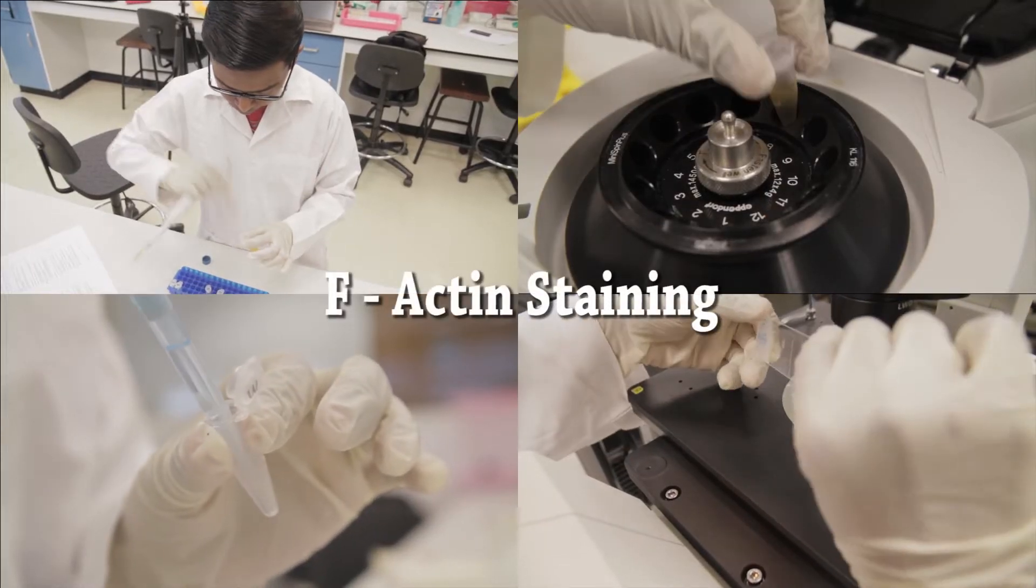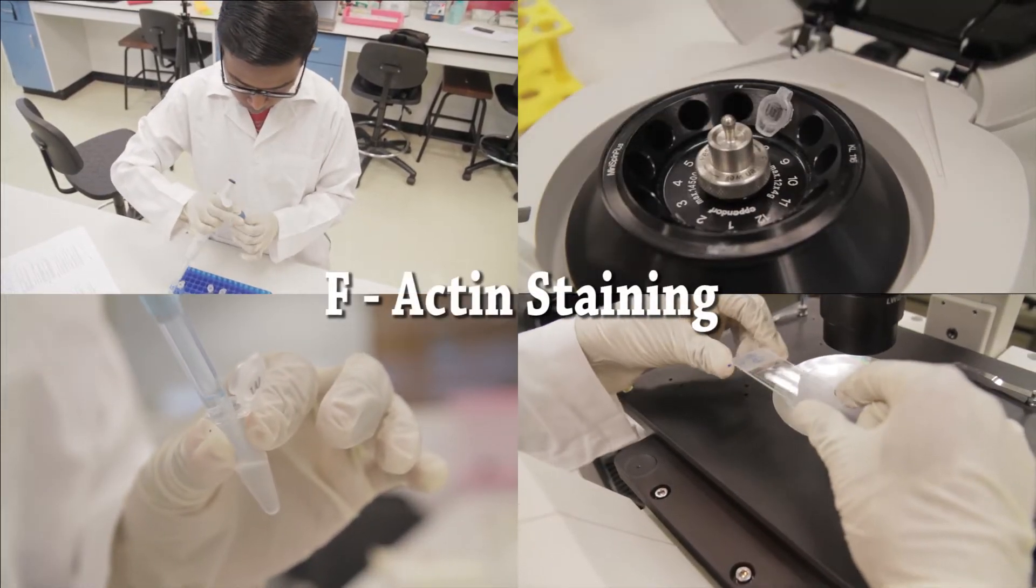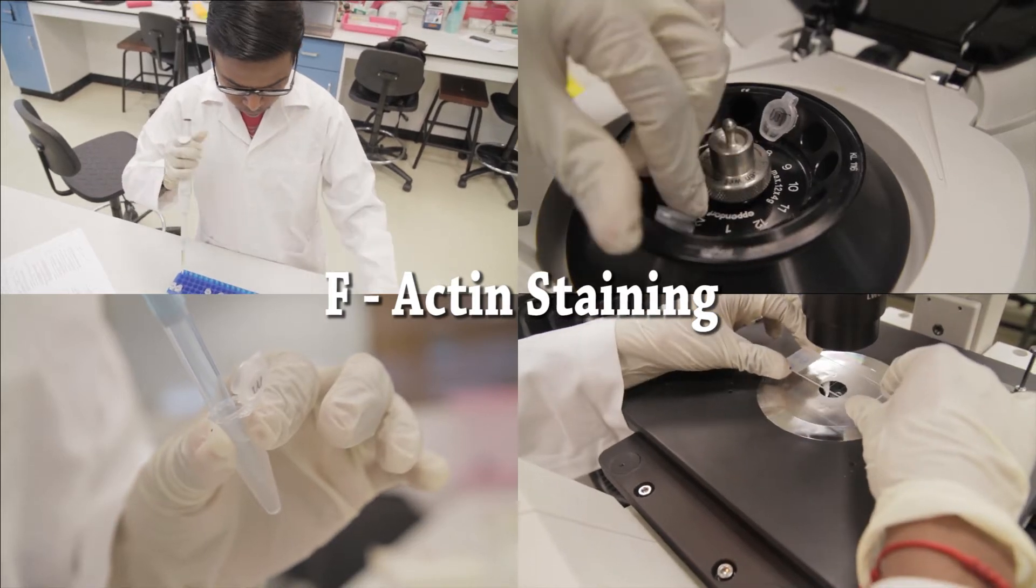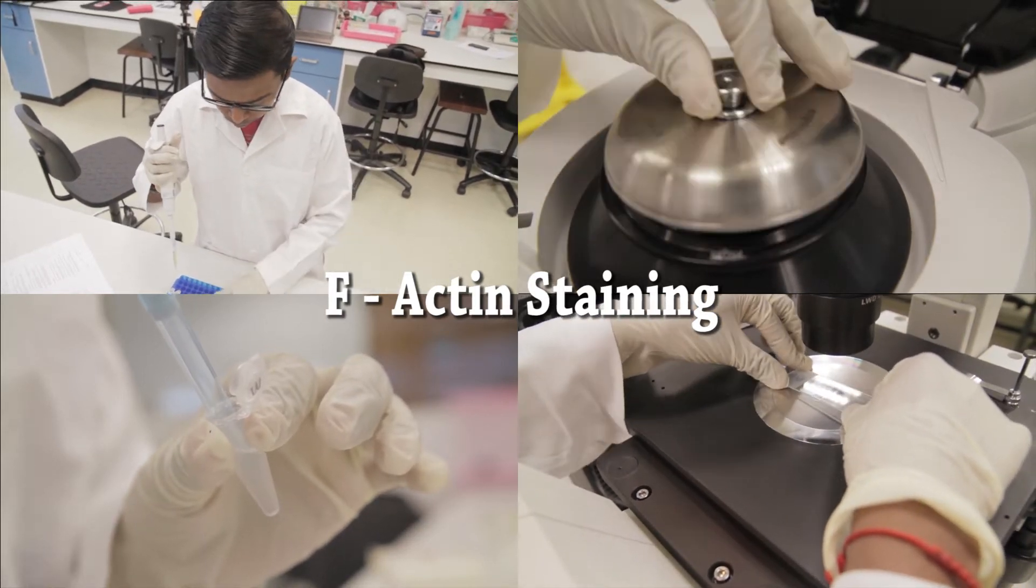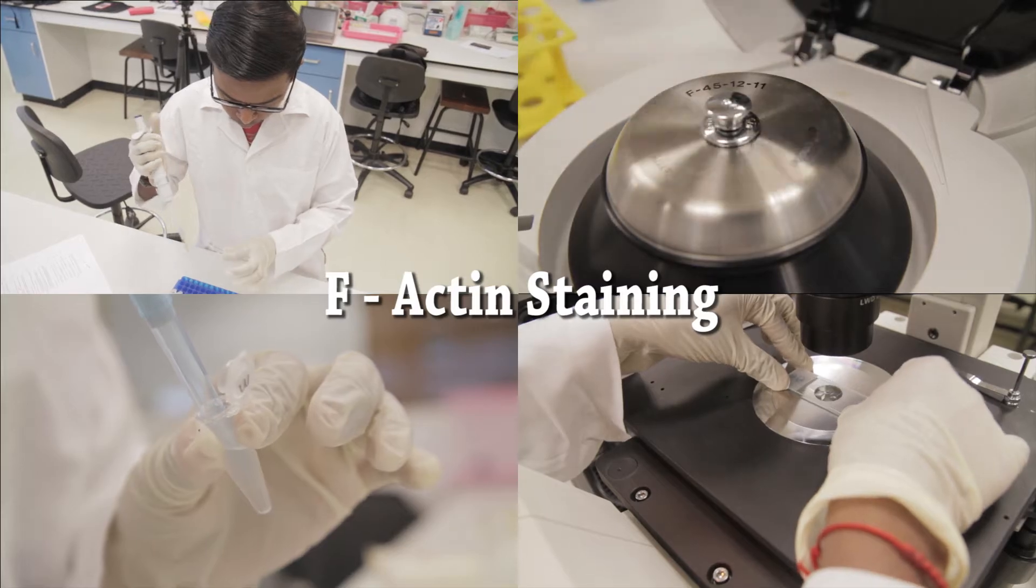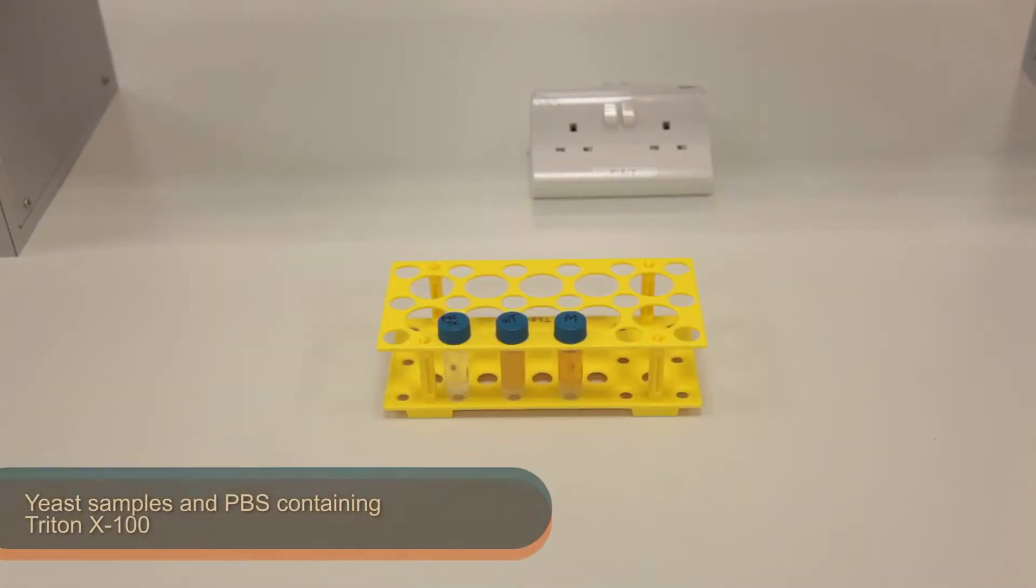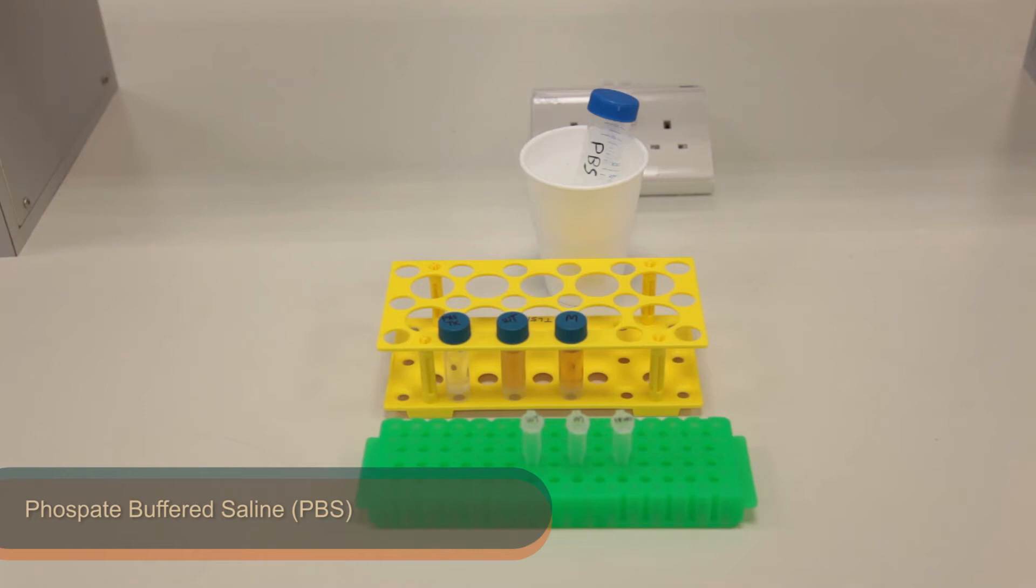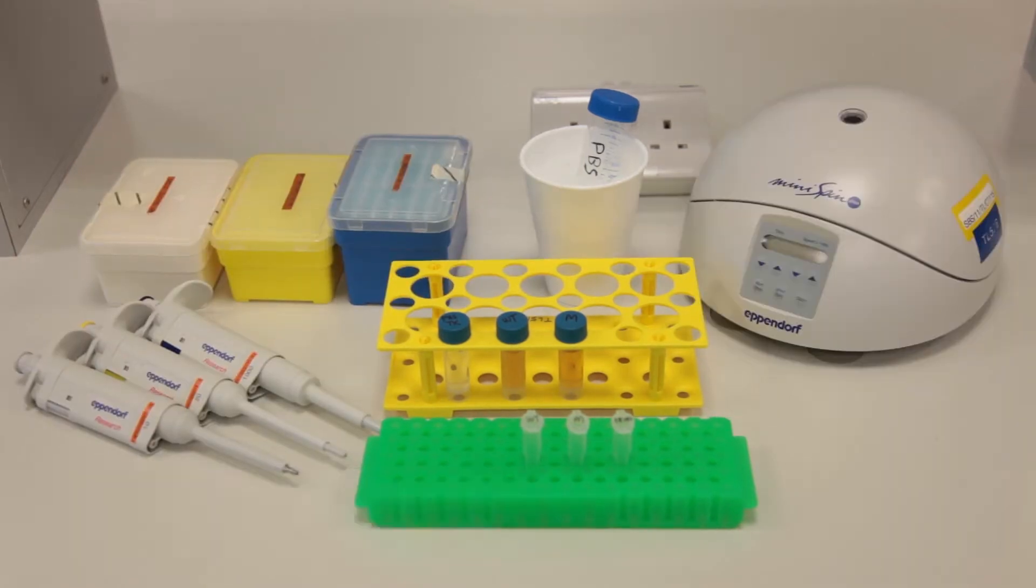In part 2 of this series, we will be carrying out an F-actin staining. F-actin is important in many cellular processes such as cell signaling and cell division. These are the reagents and equipment needed. Do check if you have everything before you start.